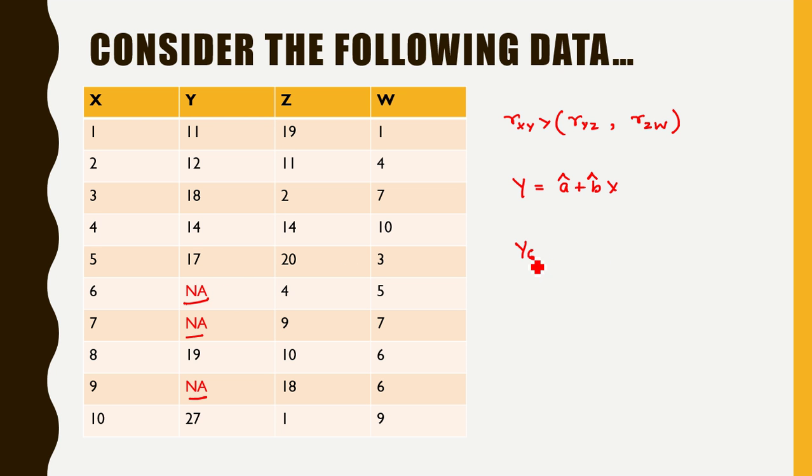For example, y6 equals a cap plus b cap x6, y7 equals a cap plus b cap x7, and y9 equals a cap plus b cap x9.